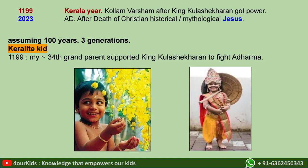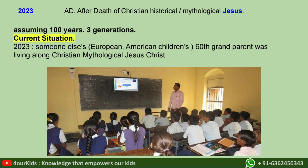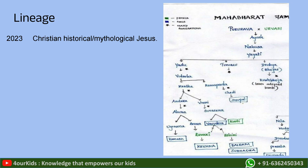Similarly, a Kerala kid would say their 34th great-grandparent supported King Kulashekara to fight adharma. What is happening in our schools is that when we write 2023, we are saying that a European or American child's 60th grandparent was living alongside the Christian mythological figure of Jesus Christ.